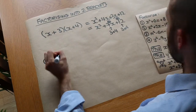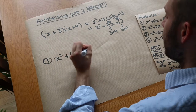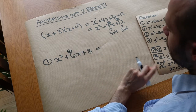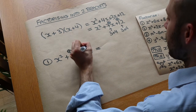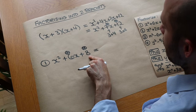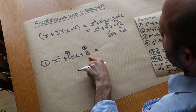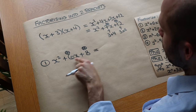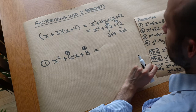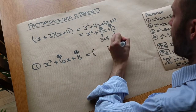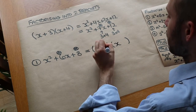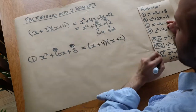Let's do an example: x squared plus 6x plus 8. We need two numbers which add to give 6 and multiply to give 8. Thinking of numbers that multiply to give 8: 8 and 1 don't add to give 6, but 4 and 2 do — 4 plus 2 is 6. So the factorisation is (x + 4)(x + 2). The order doesn't matter.